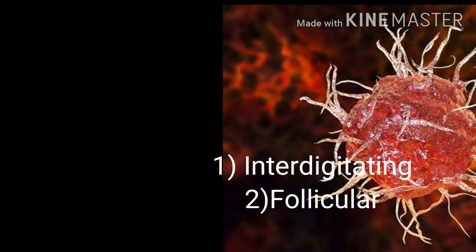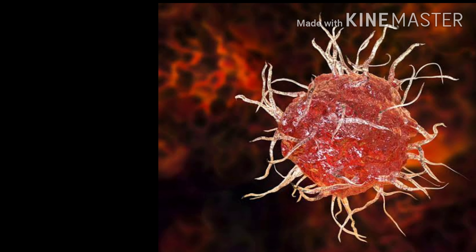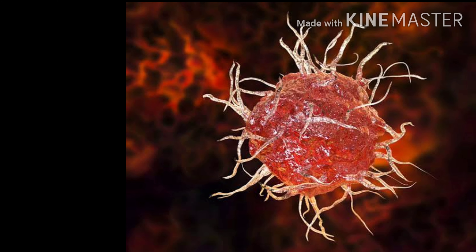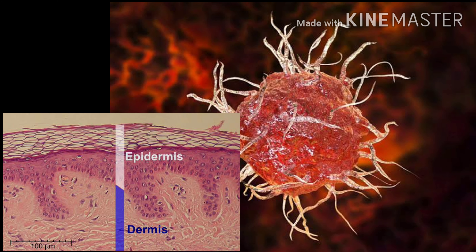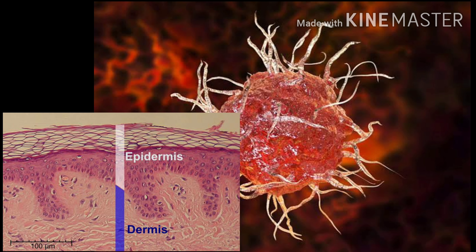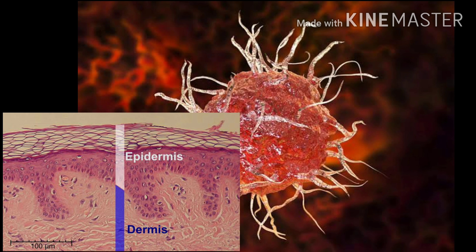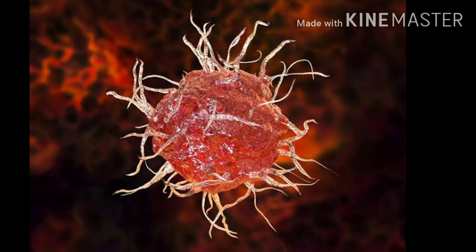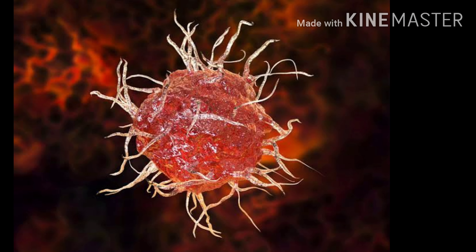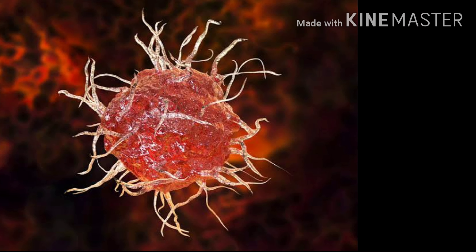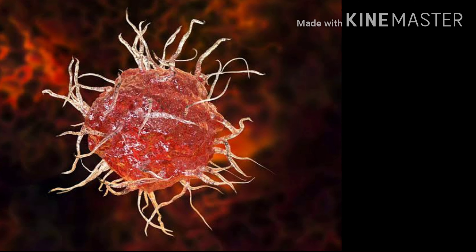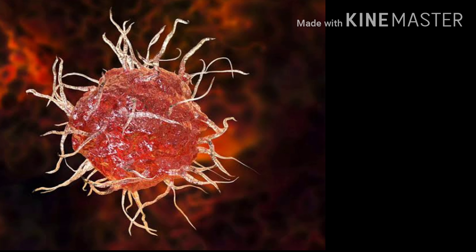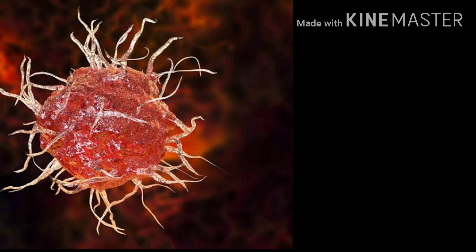Interdigitating dendritic cells usually reside within our epidermis. They trap bacteria or any foreign antigen and present it to the immune system for the production of antibodies.